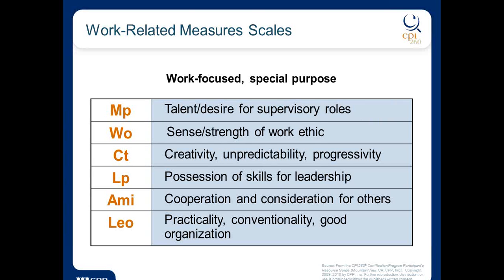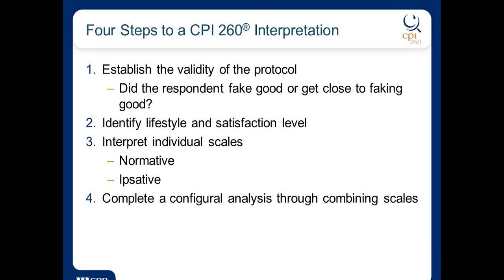The six work-related measures include managerial potential, work orientation, creative temperament, and law enforcement orientation. As you look at all 29 scales, you start to see patterns — an empathy score that's high, tolerance high, good impression high, and amicability high — you start to see someone who likes people, is warm, supportive, cooperative. Those patterns across scales become the basis for your description of strengths, style, and possible blind spots.